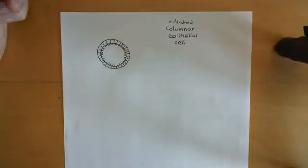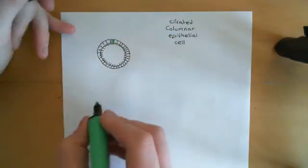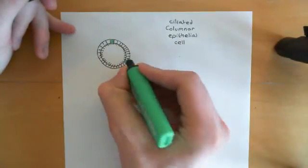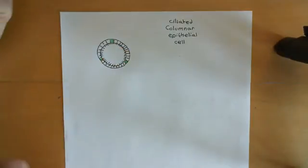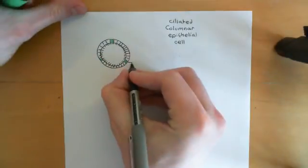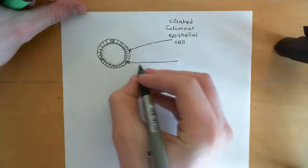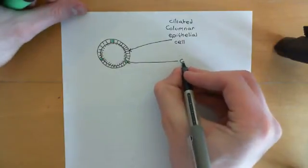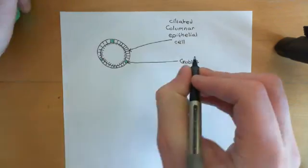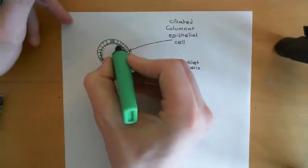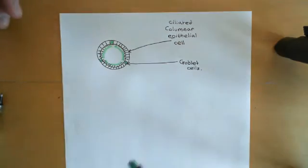Amongst the columnar epithelial cells, you're going to have some special cells which produce some of the mucus — these shouldn't be ciliated. These cells, dotted amongst the columnar epithelial cells, are the goblet cells. The goblet cells are involved in producing some of the mucus that's going to be on the surface of the cilia, and which is going to participate in the mucociliary escalator, which is involved in keeping the airways clean.